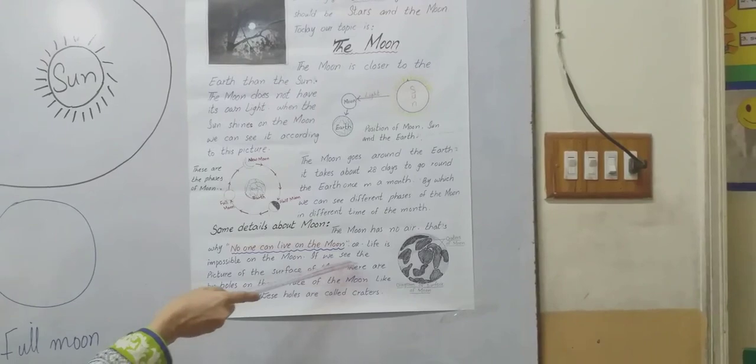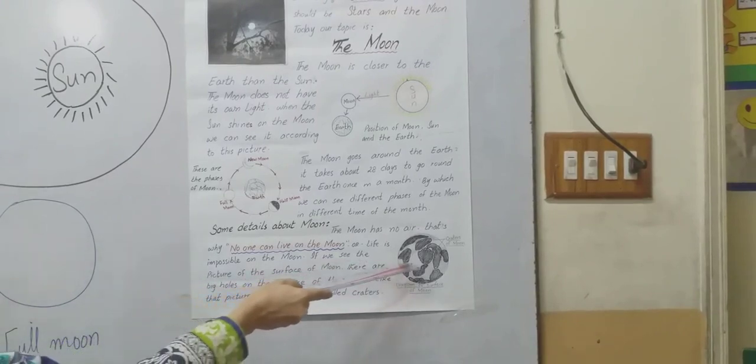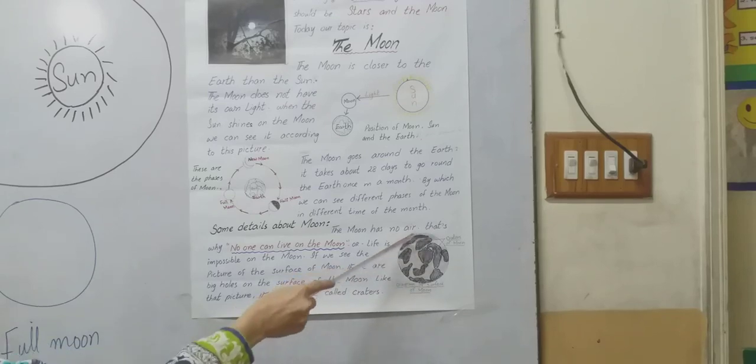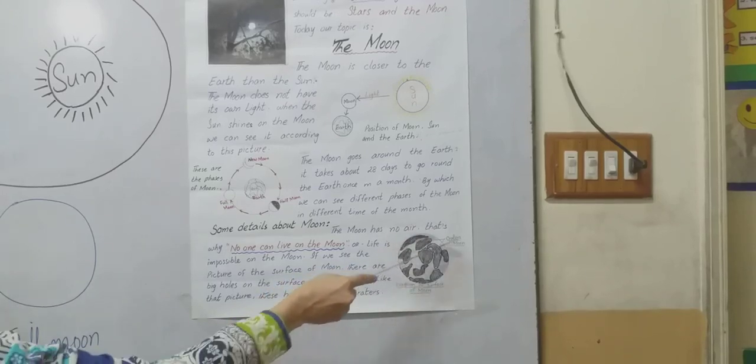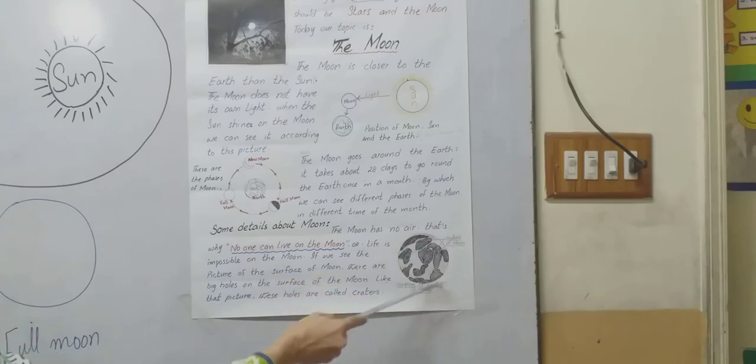If we see the picture of the surface of the moon, there are big holes on the surface. These holes are called craters. This is the picture of the surface of the moon showing craters.